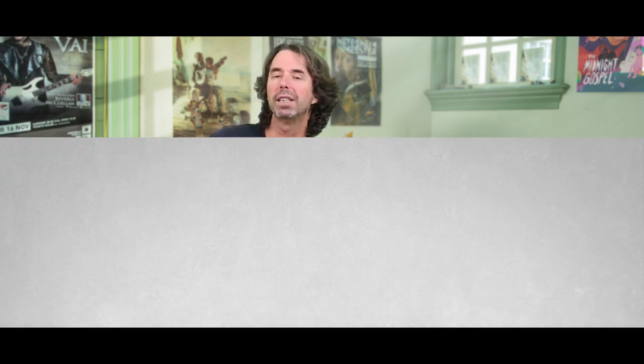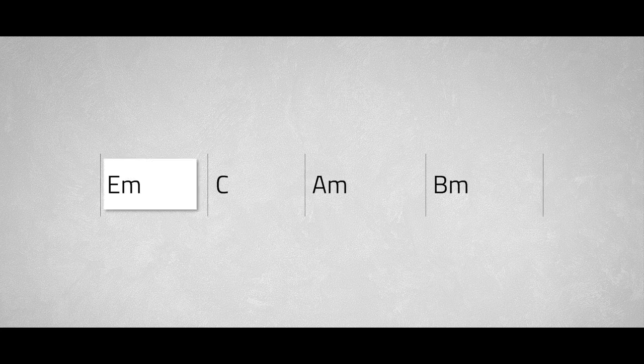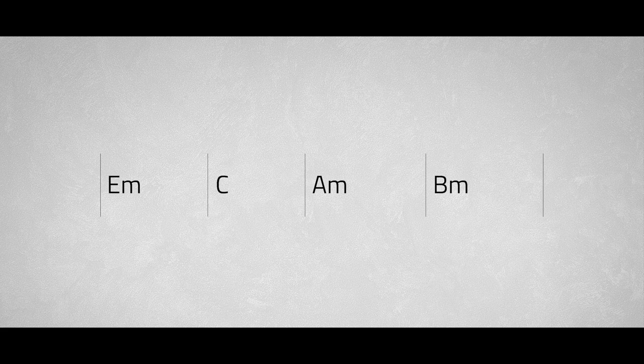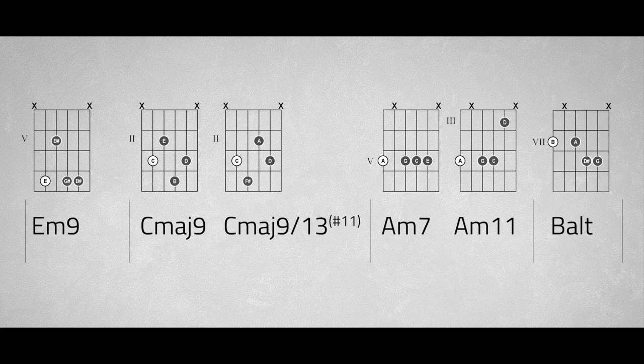Remember that we started off with this simple chord progression in E minor: E minor, C major, A minor, and B minor. Now let's go nuts with this and change the chords by adding 7th and 9th and also some other interesting extensions like the 11th and 13th. So we have E minor 9...